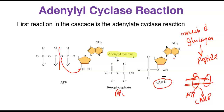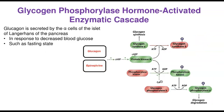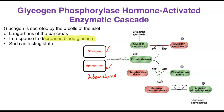Glycogen phosphorylase is the enzyme that leads to the degradation of glycogen — it promotes glycogenolysis to produce glucose, since glycogen is a polymer of alpha-D-glucose. Glucagon is secreted by the alpha cells of the islets of Langerhans of the pancreas, in response to decreased blood glucose levels such as in the fasting state. Epinephrine is the fight-or-flight hormone secreted by the adrenal cortex — it acts more quickly, whereas glucagon acts over a longer term.